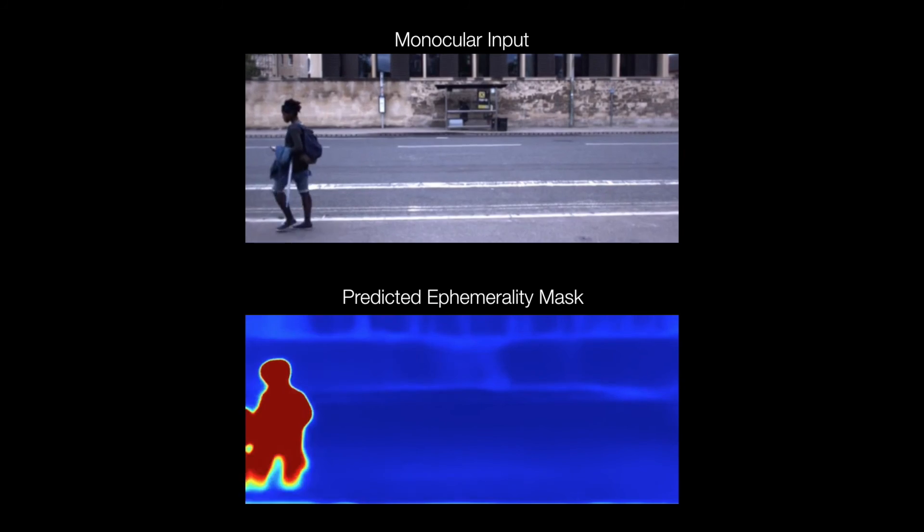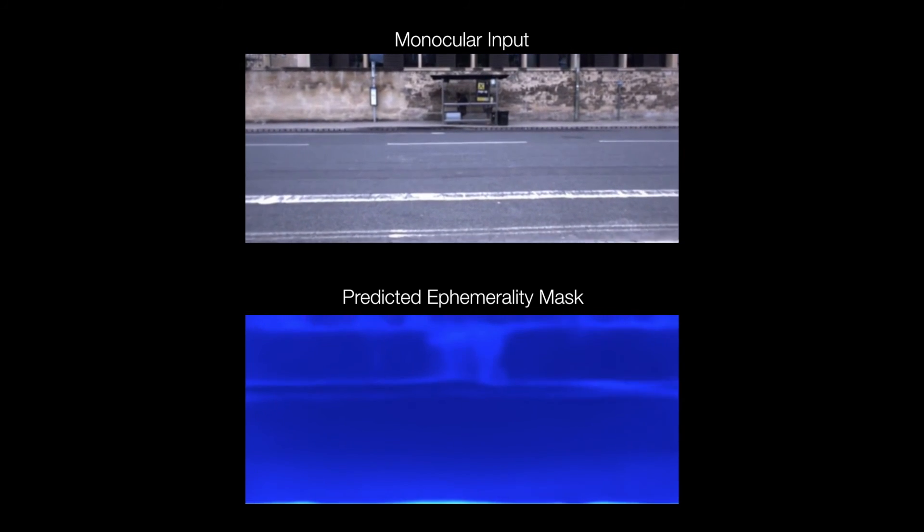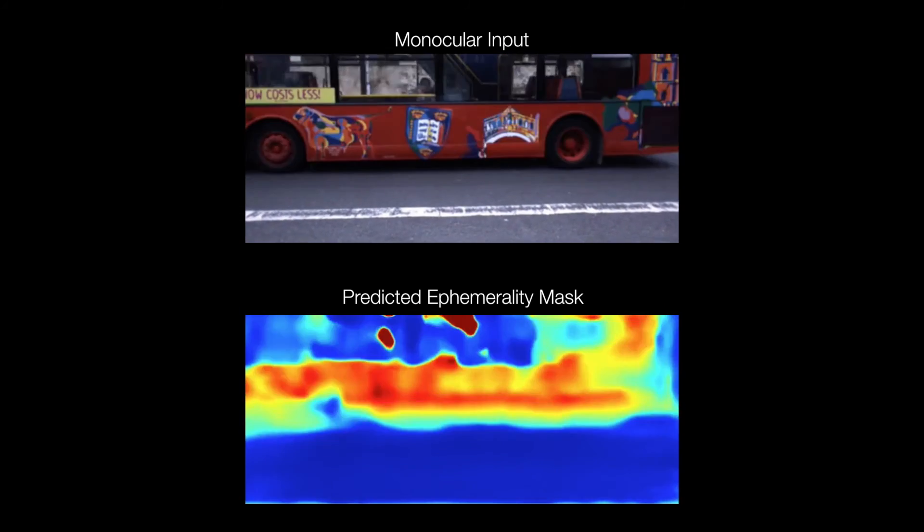Our learned ephemerality mask highlights the bus, allowing us to calculate our trajectory from only the static parts of the scene.